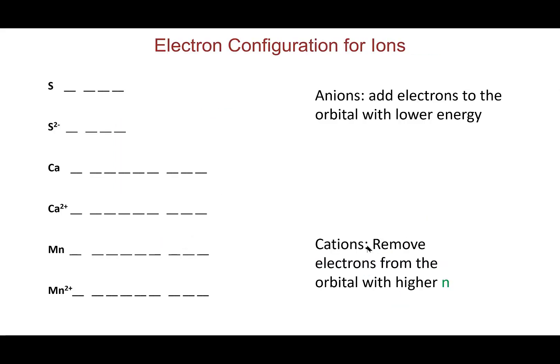To find the electron configuration of an ion, start with the neutral atom's configuration, then add or remove electrons according to the ion's charge. When adding electrons, add them to the lowest energy orbital first. When removing electrons, remove them from the orbital with the highest n quantum number first.